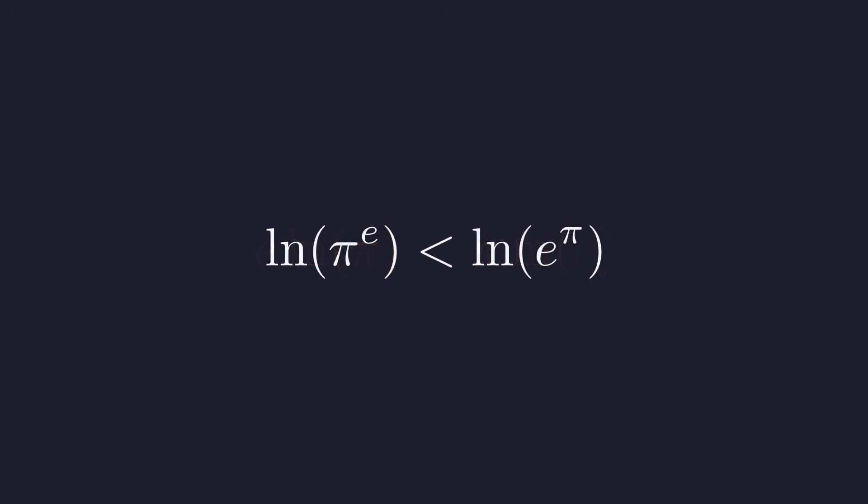Which gives us the natural log of pi to the e is less than the natural log of e to the pi. And since the natural logarithm preserves order, we can peel it away from both sides. And there's our answer. Pi to the power of e is indeed smaller than e to the power of pi.